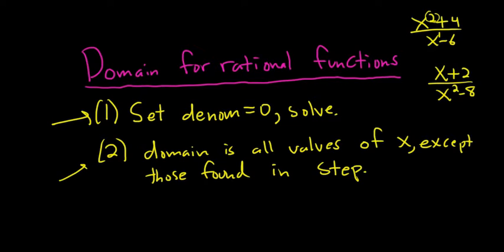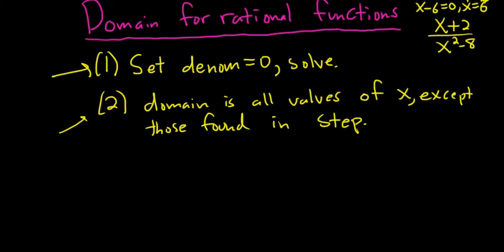In this example, if you set the bottom equal to 0, you get x minus 6 equals 0, so x equals 6. That means 6 makes the bottom 0, so the domain is everything except 6. You can plug in anything you want except 6. The domain is everything you can plug in, as long as it doesn't make the bottom 0.